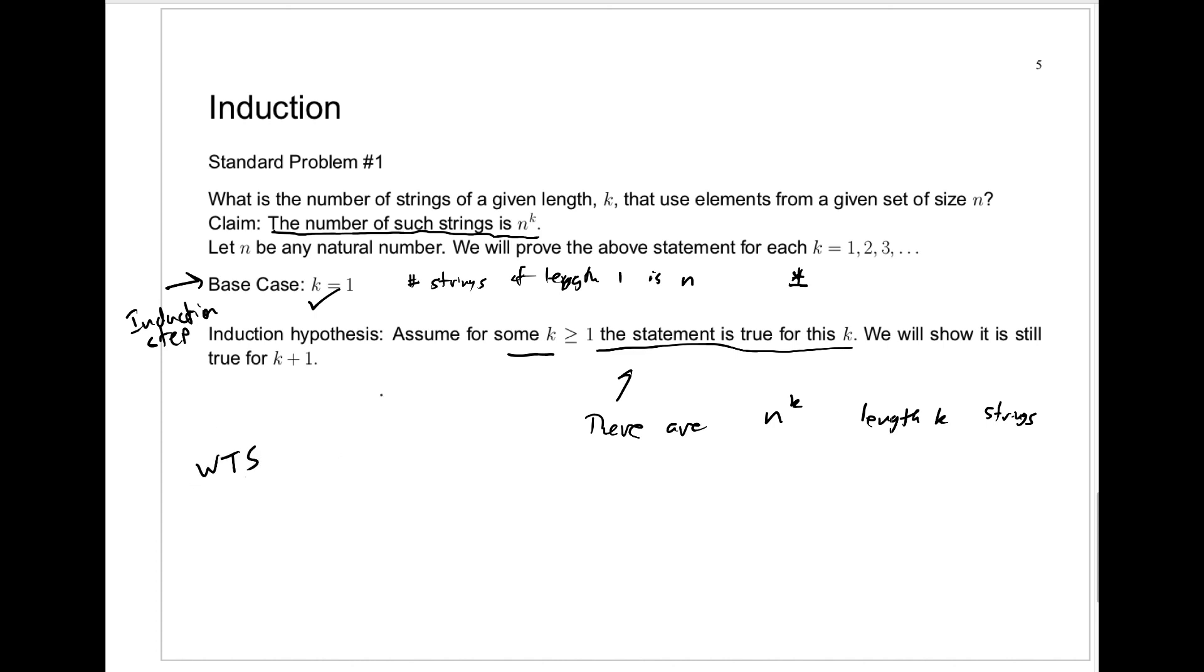What do we want to show? I'll use WTS often to denote want to show. We want to show there are n to the k plus 1 strings of length k plus 1.